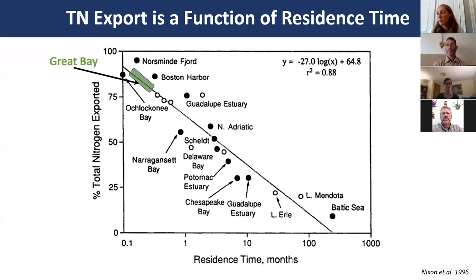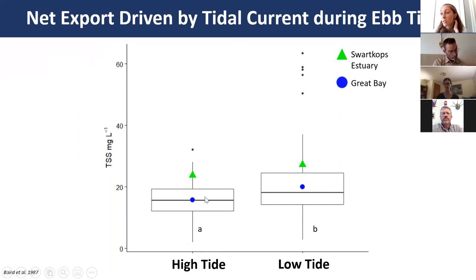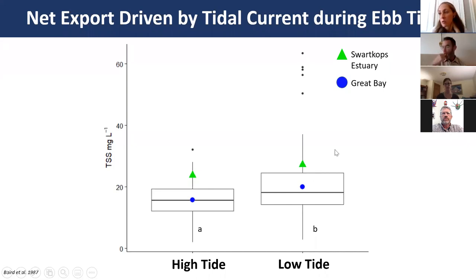Net export of particulate materials is also driven by tidal currents during outgoing or ebbing tides. A box plot of high tide vs. low tide total suspended solid concentrations over the 10-year monitoring period shows a statistically significant difference, with low tide concentrations being higher—consistent with findings from Baird et al. 1987 in a South African estuary.